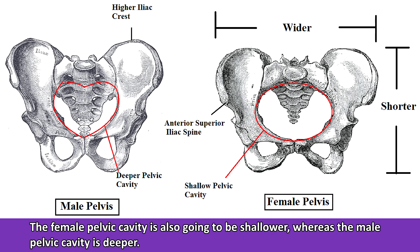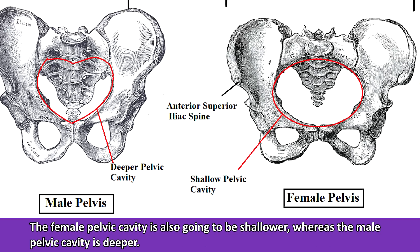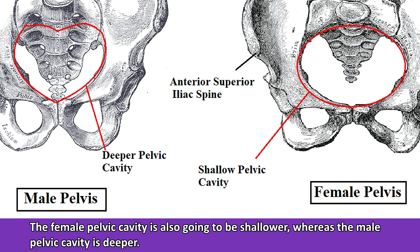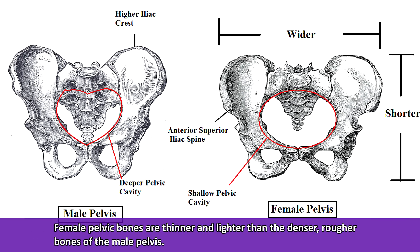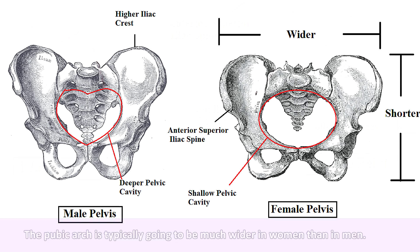The female pelvic cavity is also going to be shallower, whereas the male pelvic cavity is going to be deeper. Next, the female pelvis is going to be much lighter in weight compared to the male pelvis. And even though the female pelvis is quite a bit wider than the typical male pelvis, these bones of the female pelvis are thinner and lighter. On the male pelvis, they're going to be a little denser and a little rougher in comparison.